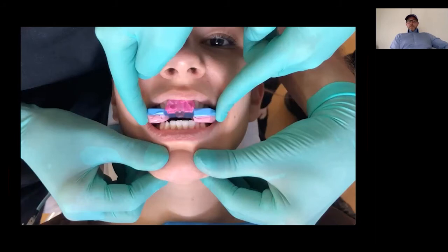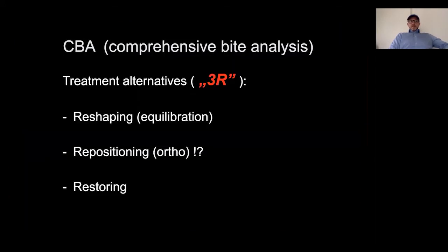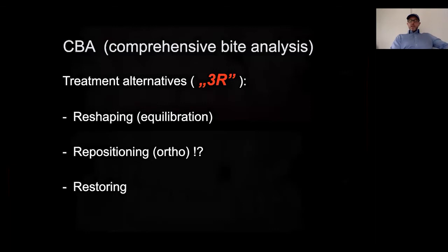This is a phase from the CR recording in a specific patient that utilizes an NTI kind of splint to achieve the correct CR position, and then a special wax bite is recorded. So we have three different treatment alternatives according to the comprehensive bite analysis. The first R is reshaping — this is equilibration. The second R is repositioning, which means orthodontic positioning of the teeth. And the third R is restoring, with tabletops and other indirect restorations.